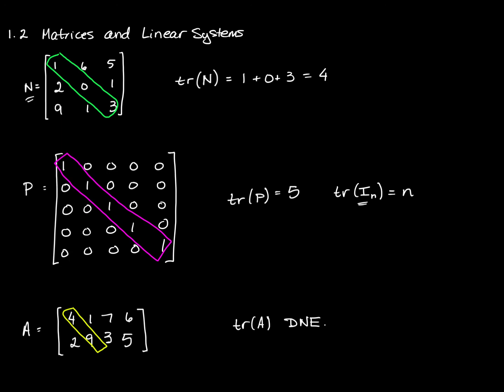So one of the criteria that has to be in place in order to find a trace is that the matrix you're looking for the trace of has to be a square matrix. If it's not a square matrix, it doesn't have a trace.